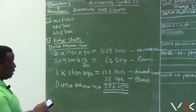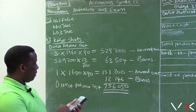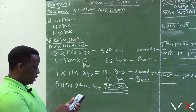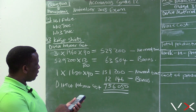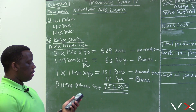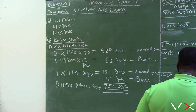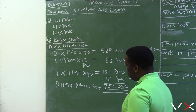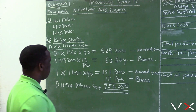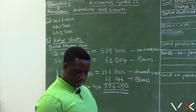Let's verify this amount: 529,200 + 63,504 + 151,200 + 12,146 = 756,050. This amount is to be transferred to the production cost statement. So 756,050 is our direct labor cost.